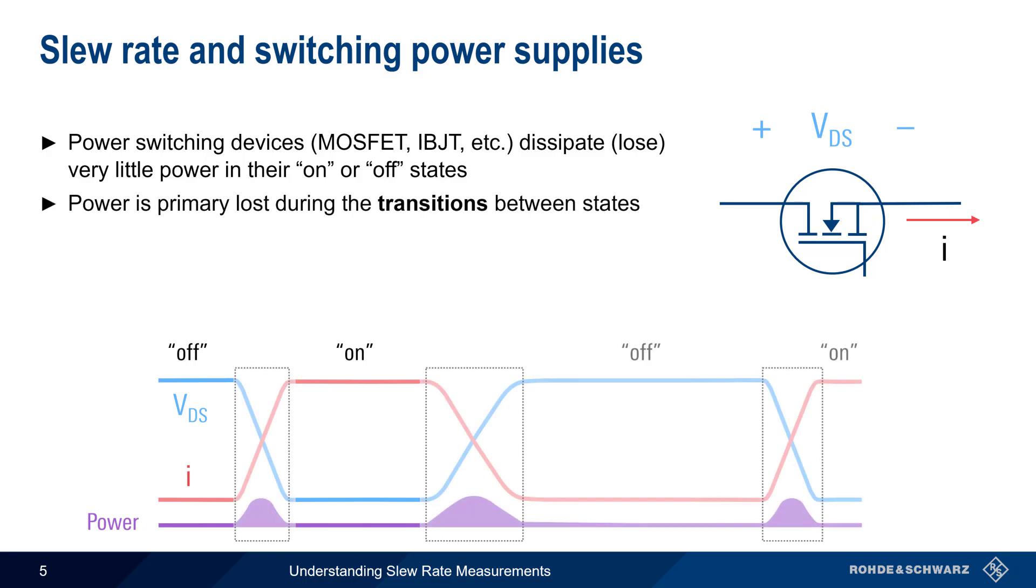However, during the transitions between the on and off states, both voltage and current are non-zero, and power will therefore be dissipated by the switching device.